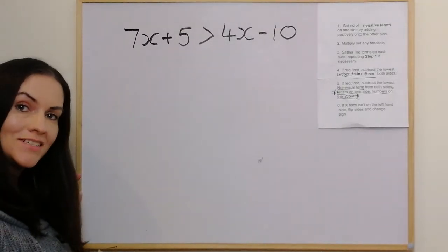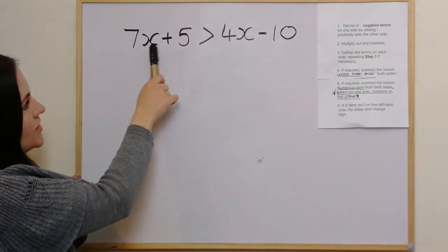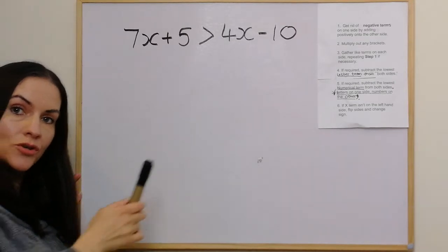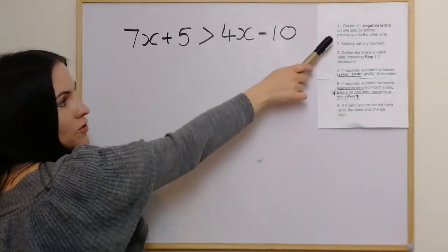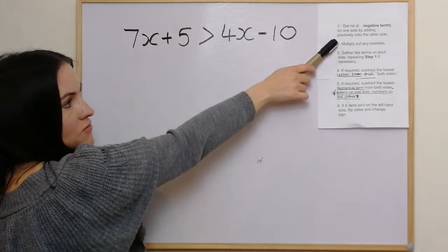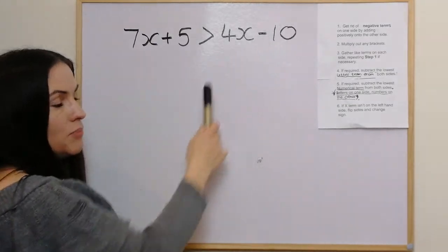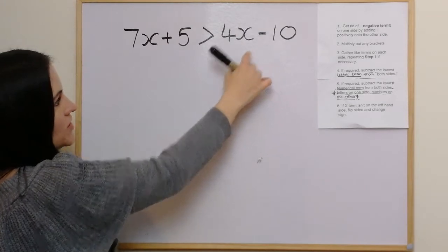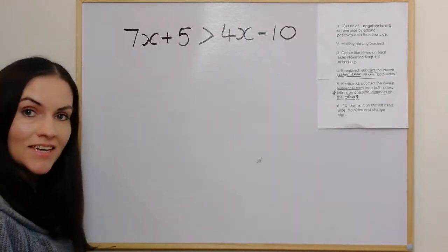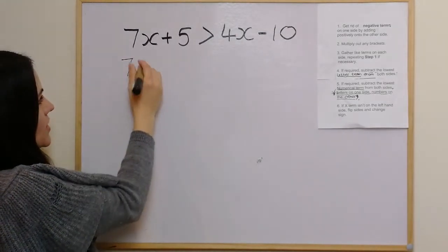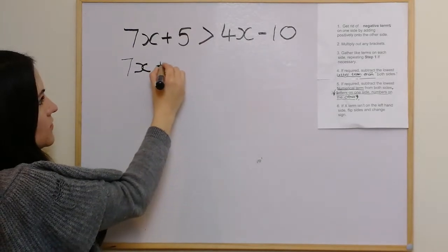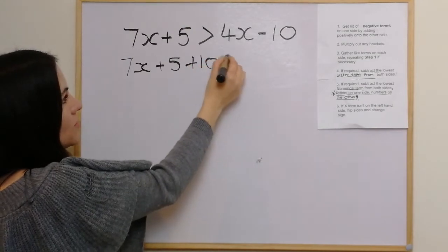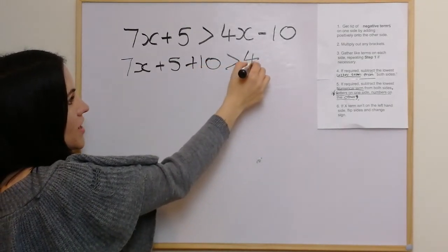So we have our first example: 7x plus 5 is greater than 4x minus 10. Looking at step one, we get rid of any negative terms on one side by adding it positively onto the other side. We have a negative term here — the minus 10 — so we add it onto the other side. So we have 7x plus 5 plus 10, which is greater than 4x.